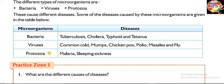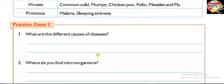Bacteria causes diseases like tuberculosis, cholera, typhoid, and tetanus. Viruses cause common cold, mumps, chicken pox, and many others. Protozoa causes malaria and sleeping sickness.